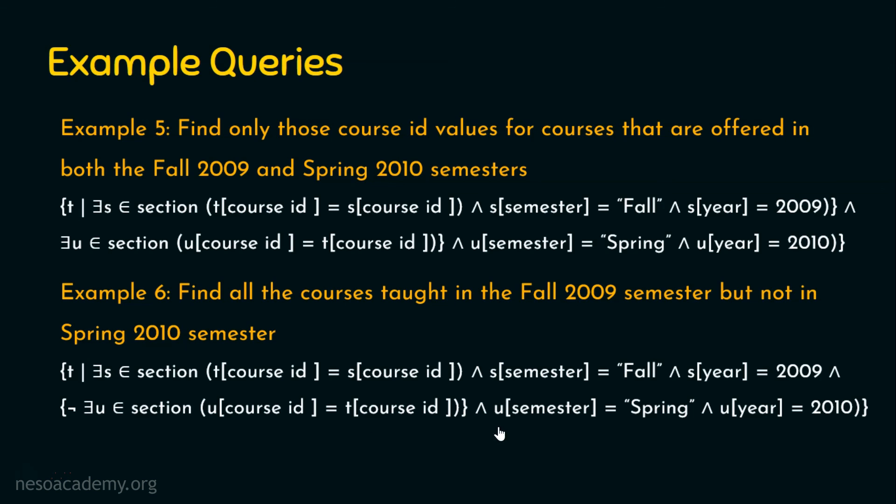I hope now you will be able to write tuple relational calculus expressions. When you write a tuple relational calculus expression, please ensure your logic is correct. If a table is given we need not make assumptions, but in this example we assumed semester and year are different columns in the section relation. If the question gives semester and year in the same column, write the expression accordingly. We have completed tuple relational calculus — formal definition and example queries. In the next presentation let's focus on domain relational calculus. Thank you for watching.